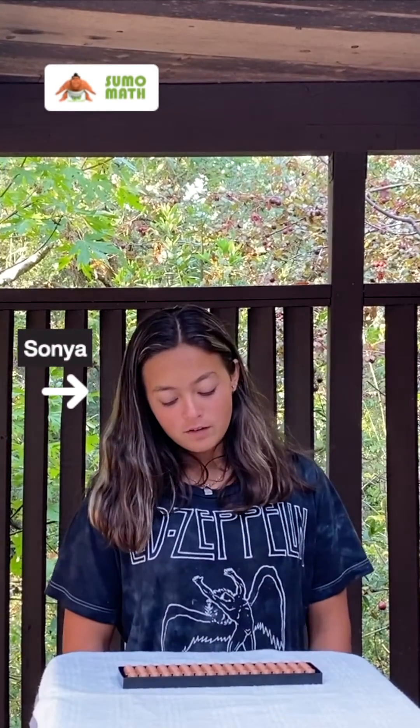Privet! I'm Sonia. For Beetle 4, I'll show you how to add 6. We will do that by moving the heavenly bead and one earthly bead to the reckoning bar. We do that by pinching the two beads together with your thumb and index finger like so.